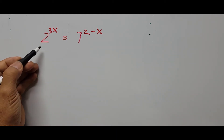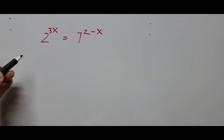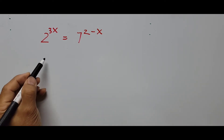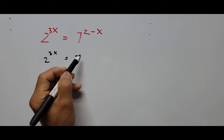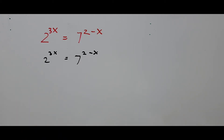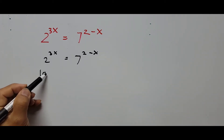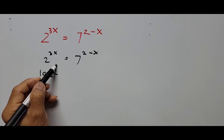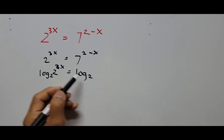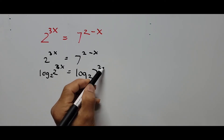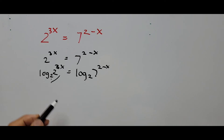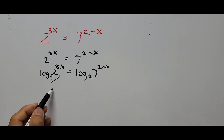We have the base of 2 and the base of 7. My aim here is to get rid of base 2. So I write the equation again: 2 raised to the 3x equals 7 raised to the 2 minus x. To get rid of base 2, I multiply with log base 2 on both sides. Applying log base 2 to 2 raised to 3x on the left, and log base 2 of 7 raised to 2 minus x on the right. Since we're raising the base with the same base log, that cancels — leaving 3x on the left.